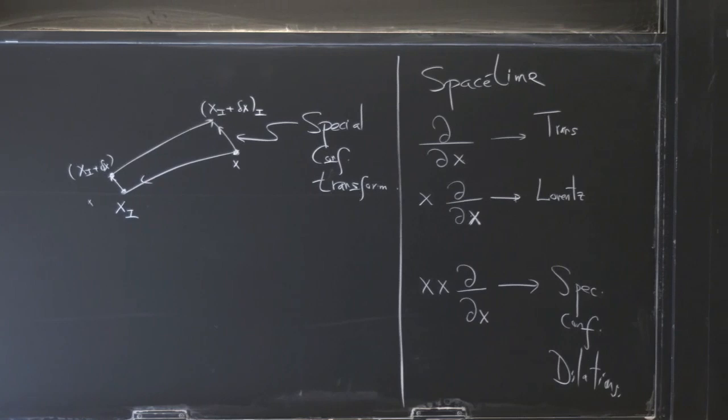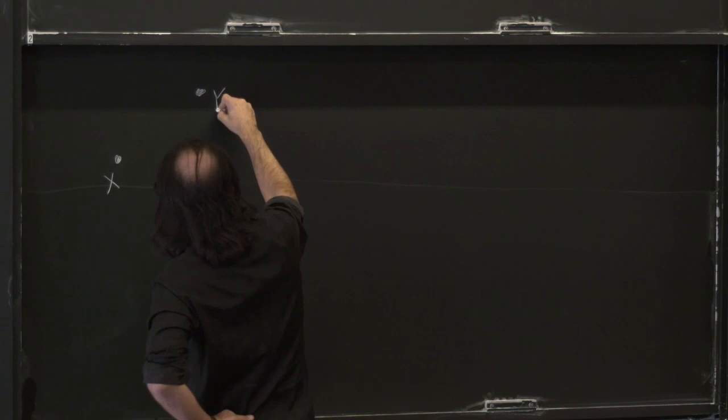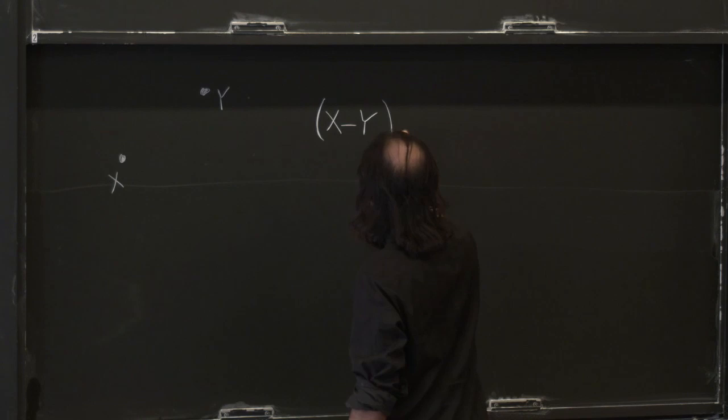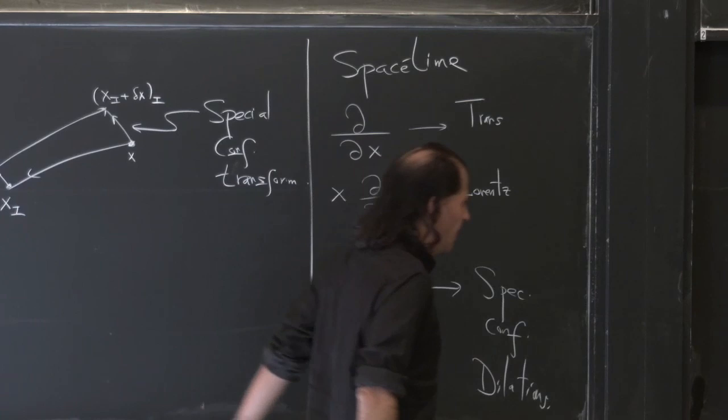So the first question is to find some set of variables on which the conformal transformations act nicely. A clue is, if we just think about two points in space-time x and y, let's ask what happens to (x minus y) squared. The dilations also look like x·d/dx, where all these indices are contracted, so we're just rescaling everything.